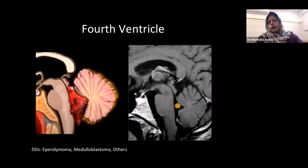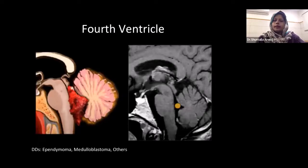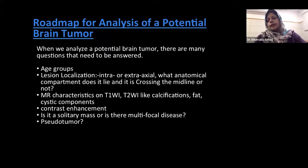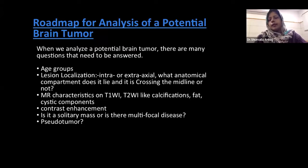First I will focus on the fourth ventricular lesions. I shared a picture diagram to show where the lesion is going to lie. The main differentials are medulloblastoma and ependymoma, and I will focus on how to differentiate these lesions. When analyzing a potential brain tumor, there are many questions to answer: first look at the age group; then localize whether it is an intraaxial or extraaxial lesion, which was already discussed in the previous session on supratentorial tumors. I will give just an overview of the intra- and extraaxial lesions.